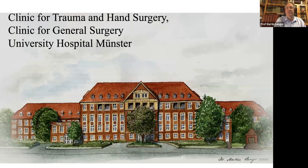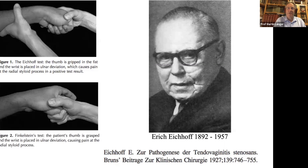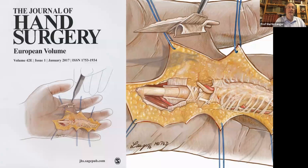This is my clinic in Münster in the northern part of Germany. In this clinic, in 1927, Erich Eichhoff was working and he had a publication about de Quervain's disease. He presented for the first time the Eichhoff test for de Quervain's disease, and in many books it is his test shown but it was named the Finkelstein test. You can see here on the left picture — this is my clinic. And perhaps you know my illustrations from the cover of the Journal of Hand Surgery; here was the first one in 2017.